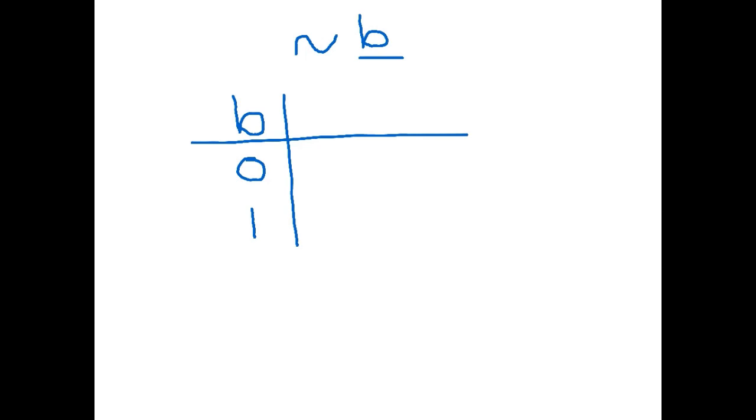Now b was the base that we started from but our expression was for not b so we have a not b column and in our not b we have to take the opposite of b. So not b, when it was false it becomes true, when it was true it becomes false. So that is a basic Boolean truth table for b and its opposite which is not b.